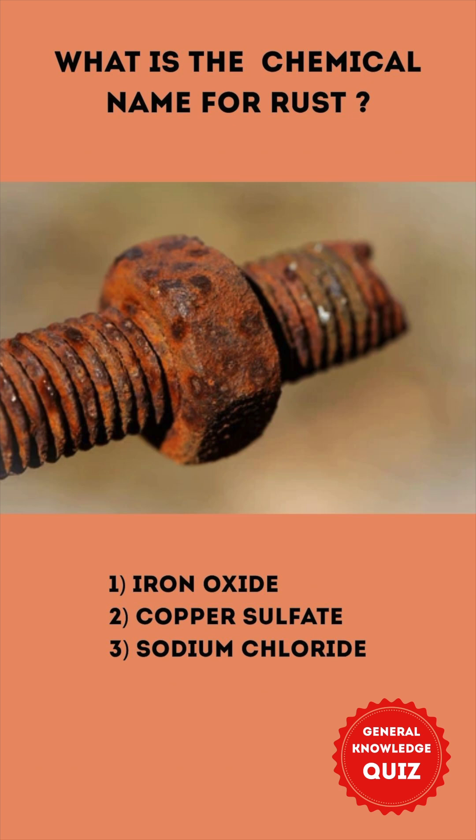What is the chemical name for rust? 1. Iron oxide. 2. Copper sulfate. 3. Sodium chloride.